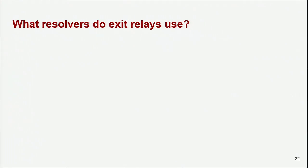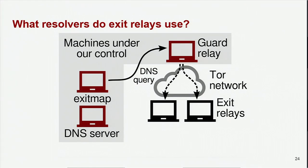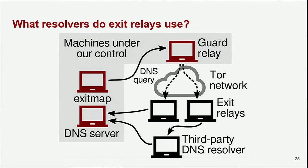To answer this question, we designed an experiment with the following steps. Step one: we set up our own DNS server for a website domain that we own. Step two: using our exit map tool, which can run a networking task over all exit relays, we made each TOR exit relay resolve a subdomain name that was under our control. We gave each exit relay its own unique subdomain name so we could tell them apart later. Step three: we inspected our DNS server logs. If an exit relay does its own resolution, we expected to see its IP address in our log; if it uses a third-party resolver, we expected to see an unrelated IP address. We ran this experiment from September 2015 to May 2016, at least once a day.